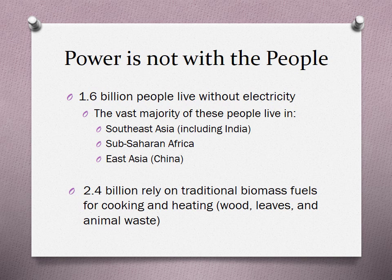2.4 billion people rely on traditional biomass fuels for cooking and heating. Biomass are things like wood, leaves, and animal waste. Cow manure is especially a valuable biomass — what do cows eat? Hay. Cows' waste tends to be very flammable, so they dry it out and use it to keep fires lit.